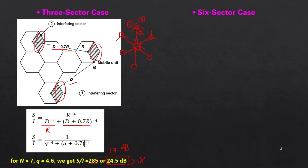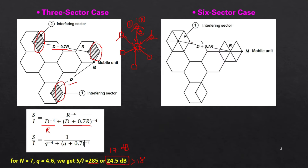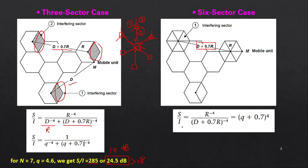Now let's look at the six-sector case. With six sectors, the number of co-channel interfering sectors is reduced further — interference comes from only a single cell. The equation becomes S/I = R^(−4) / (D + 0.7R)^(−4), which is 1 / (q + 0.7)^4. Substituting q = 4.6, we get S/I = 789, which in dB is approximately 29 dB.